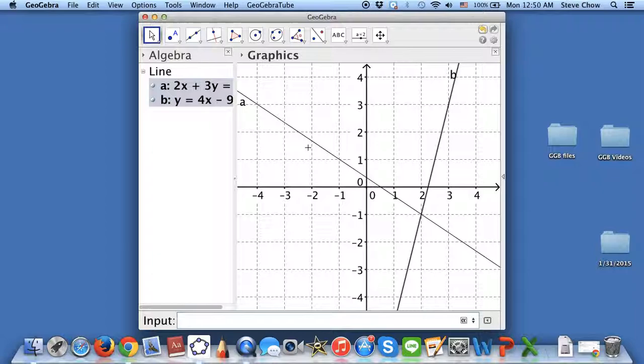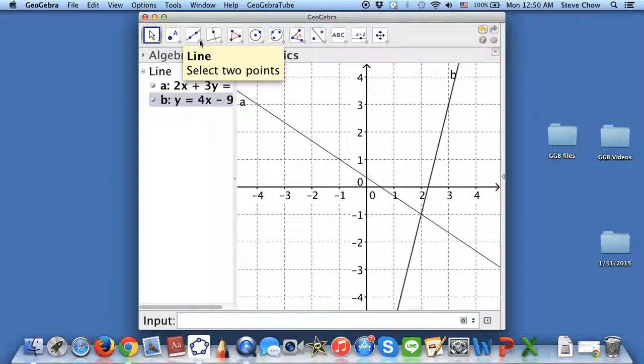As you can see we have two lines. This is pretty much a system of equations and we can clearly find the point of intersection. But sometimes maybe it's not so lucky. Maybe the point of intersection is not a whole number, so we cannot do that easily.